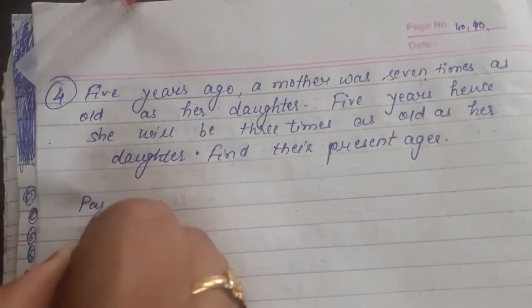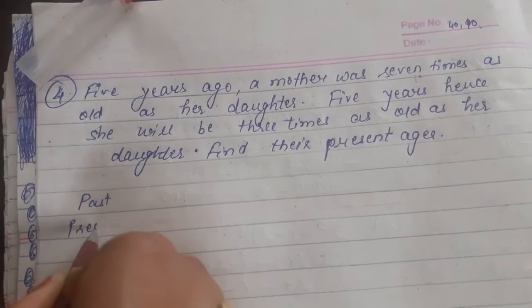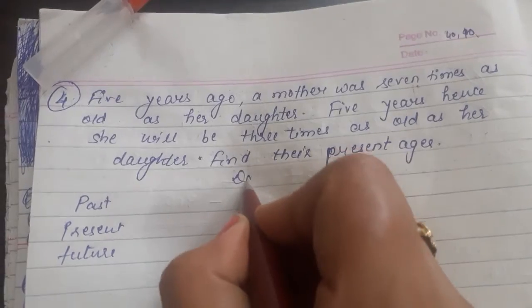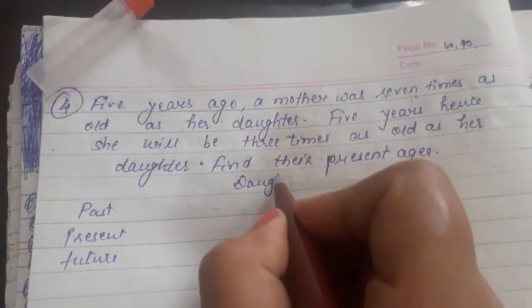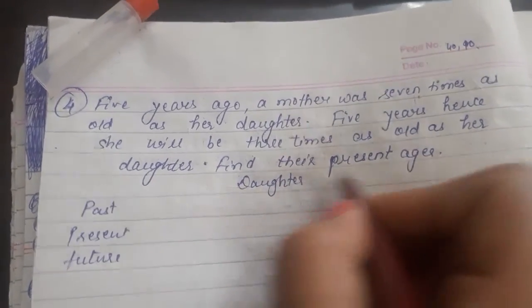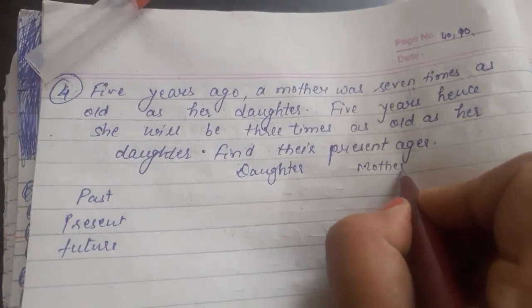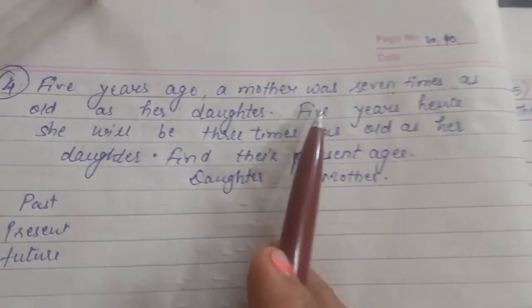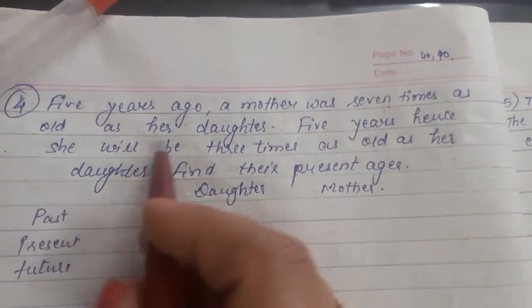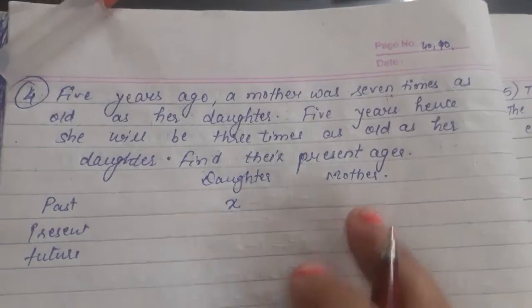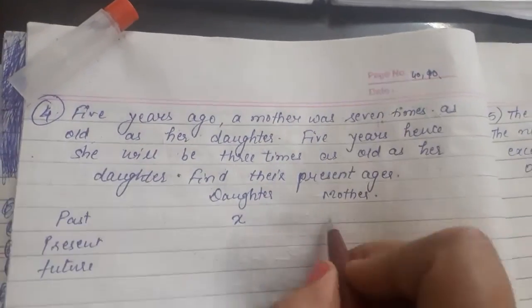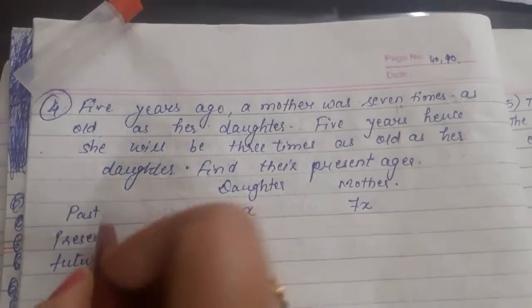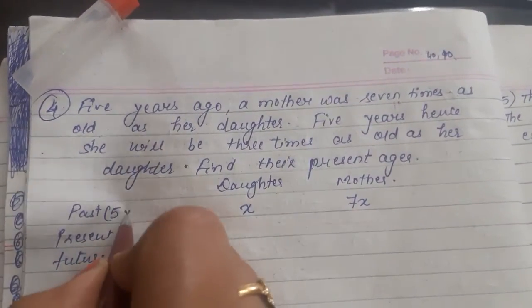I am writing here past, present, and future — for the daughter and mother. Past means five years ago. If the age of the daughter was X, then the mother's age is seven times as old as her daughter. So this is five years ago — that is the past.